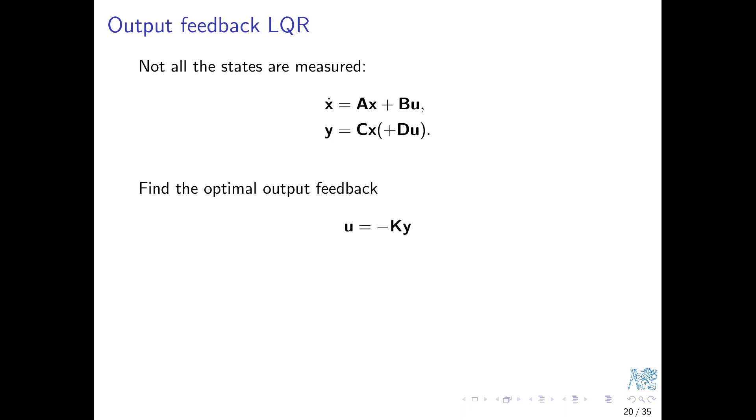The controller can be required to be just proportional, an array of static gains, for simplicity of implementation. The controller should stabilize the system and minimize the standard LQ cost. However, the trouble is that computationally this is surprisingly difficult. The difficulty comes from the existence of requirements on the structure of the feedback controller.